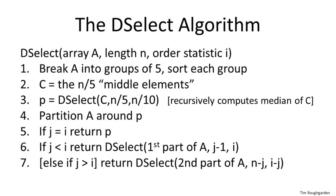Let's remind you what the algorithm is. The idea is we take the R-select algorithm, but instead of choosing a pivot at random, we do quite a bit more work to choose what we hope is going to be a guaranteed pretty good pivot. Lines one through three are the new choose-pivot subroutine, essentially implementing a two-round knockout tournament.